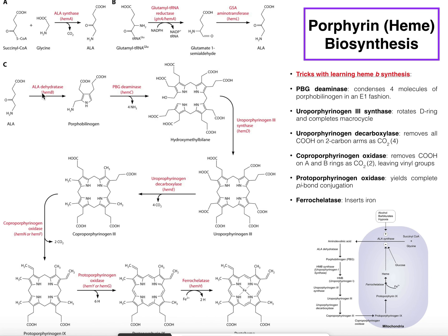The first enzyme is called ALA dehydratase. In some texts, this may be called porphobilinogen synthase, because the product of this enzyme is porphobilinogen. If you count the carbons, it basically doubles from ALA to porphobilinogen, because making one molecule of porphobilinogen requires two molecules of ALA. This enzyme condenses two ALA molecules to form what we call a pyrrole ring — an aromatic ring — with a carbon-amine sticking off of it, a two-carbon carboxyl arm, and a three-carbon carboxyl arm. That gives us porphobilinogen, also abbreviated PBG.